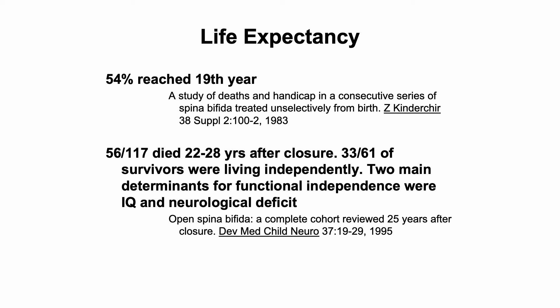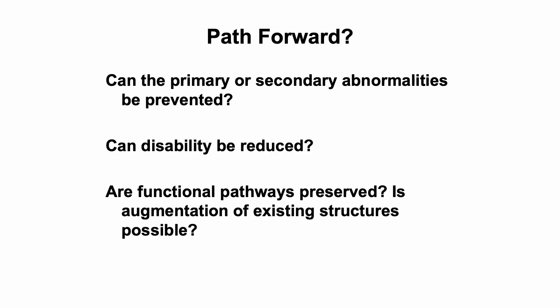In these older papers, life expectancy was calculated, and there was a large impact on survival for both cohorts of patients, often as a consequence of the chronic impact of the underlying disease. So even though this condition is amenable to surgical repair after birth and these patients often will initially do well, there is a substantial burden of disease. The question is: can these primary or secondary abnormalities be prevented? Can this disability be reduced? And can these functional pathways be preserved and augmented?